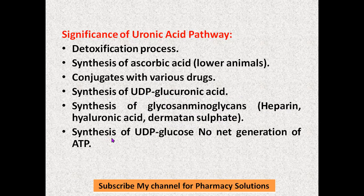The pathway is also important in the synthesis of glycosaminoglycans, which are helpful in the synthesis of heparin, hyaluronic acid, dermatan sulfate, and others. Additionally, UDP-glucose synthesized in the uronic acid pathway is helpful in glycogenesis — it supplies glucose molecules to the glycogen chain. There is no net generation of ATP in this pathway.